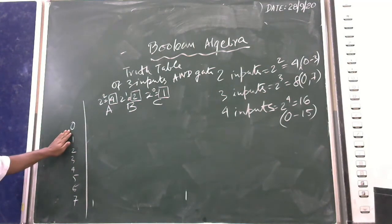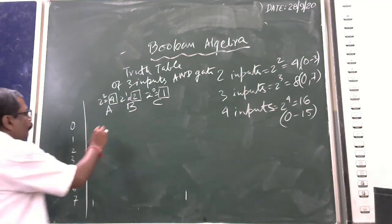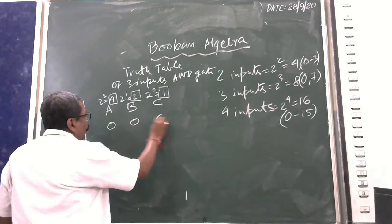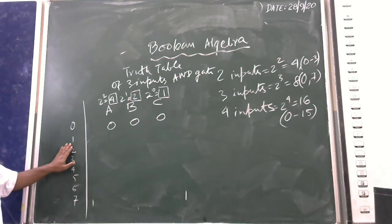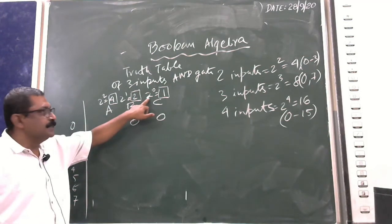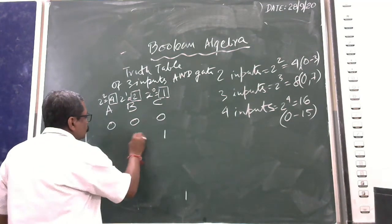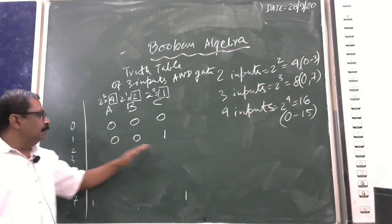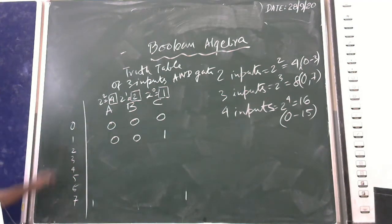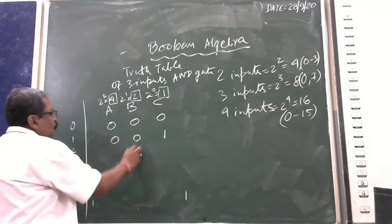For the value 0, there is no 0 present in the bit positions, so all three are 0. For the value 1, the 1 is present at position 2 to the power 0, so C is ON — giving 0, 0, 1.